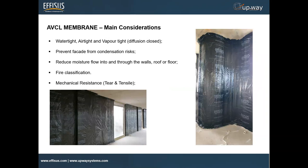Regarding the AVCL membrane, there are some main considerations. These AVCL membranes need to be watertight, airtight, and vaportight — diffusion closed — because we need to prevent the facade from condensation risks and migration of water and vapor from the inside to the outside. This will reduce moisture flow into and through walls, roofs and floors. One main consideration you should also have is regarding fire classification, which Paula will discuss shortly.